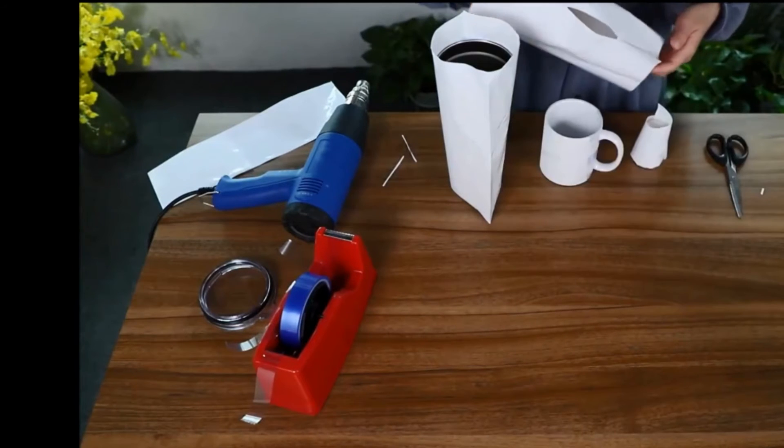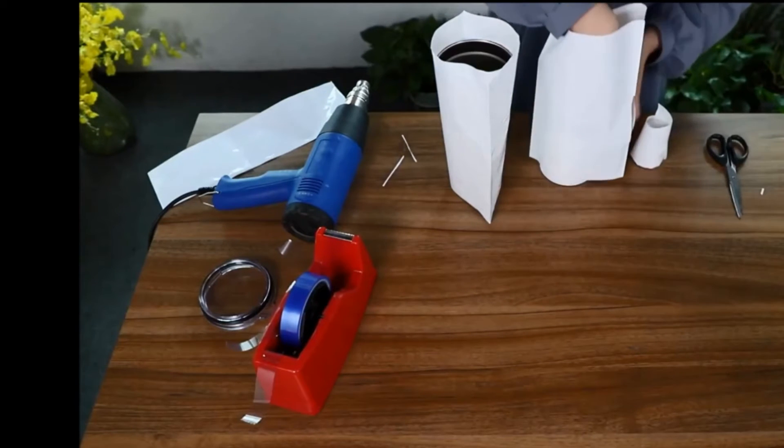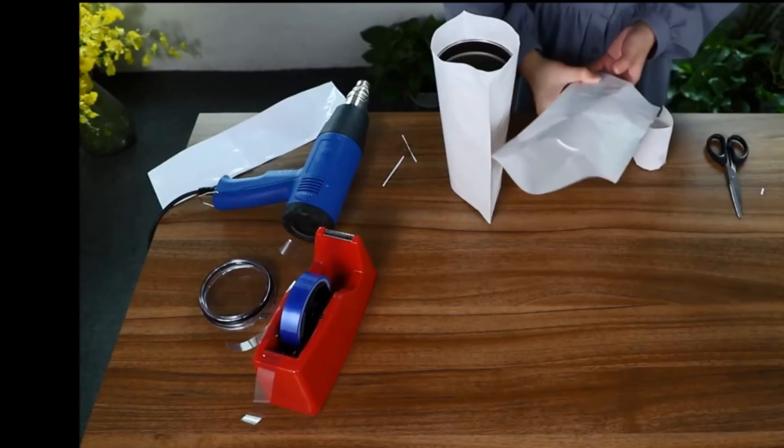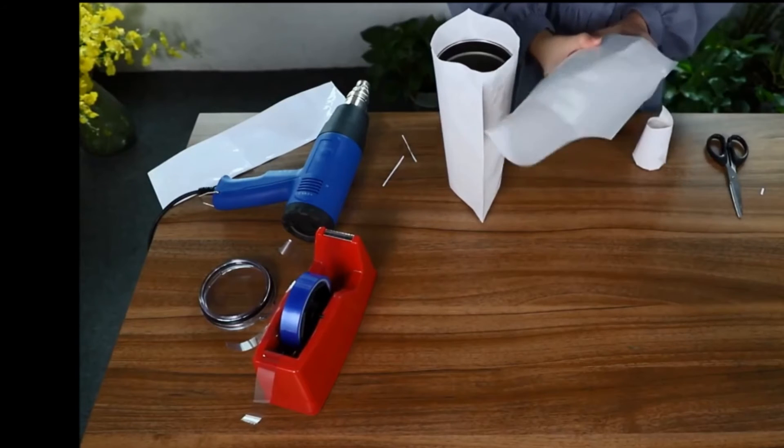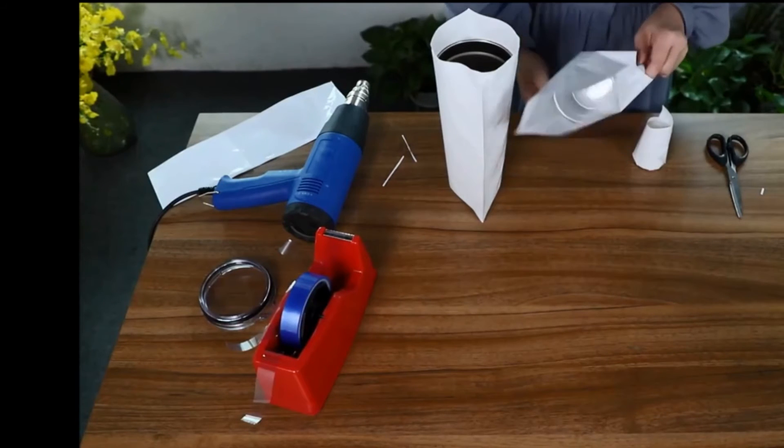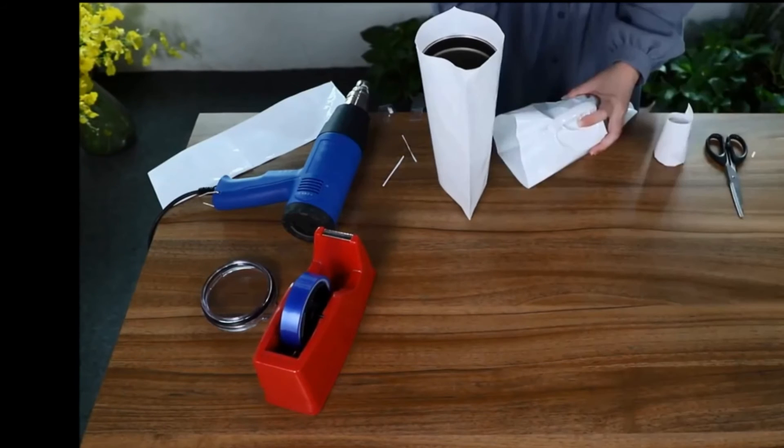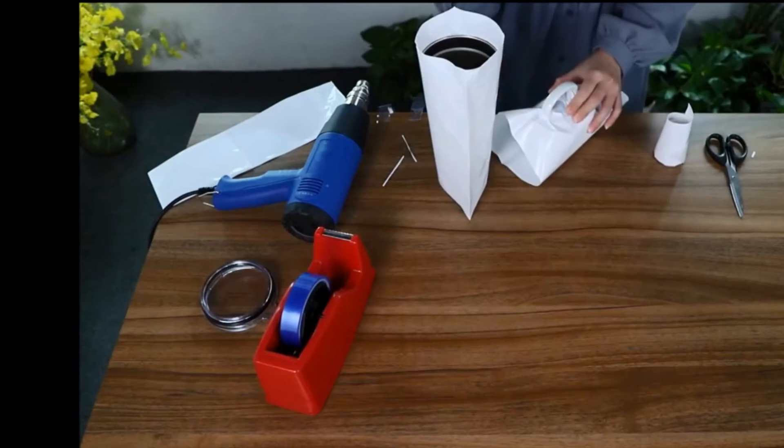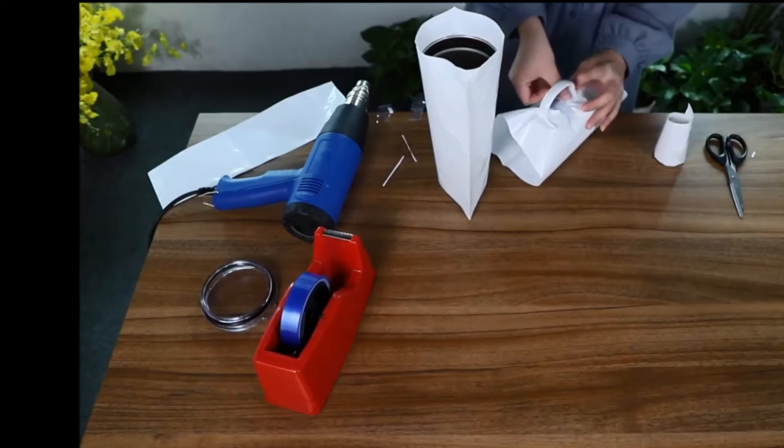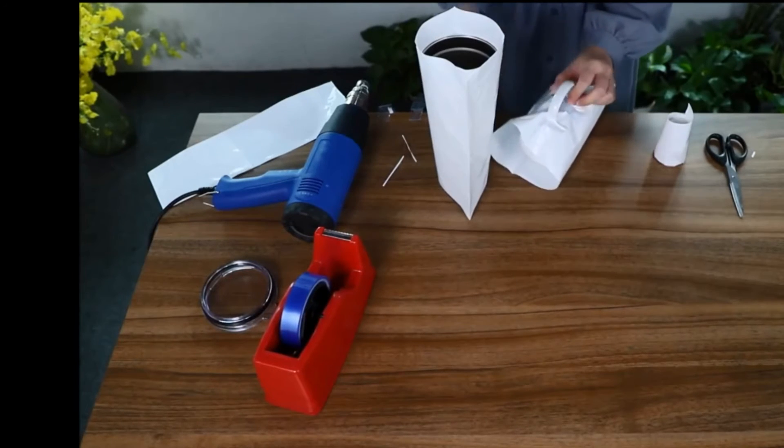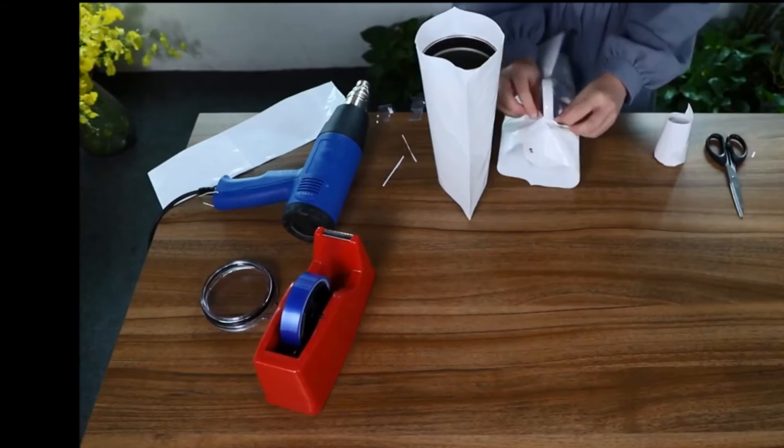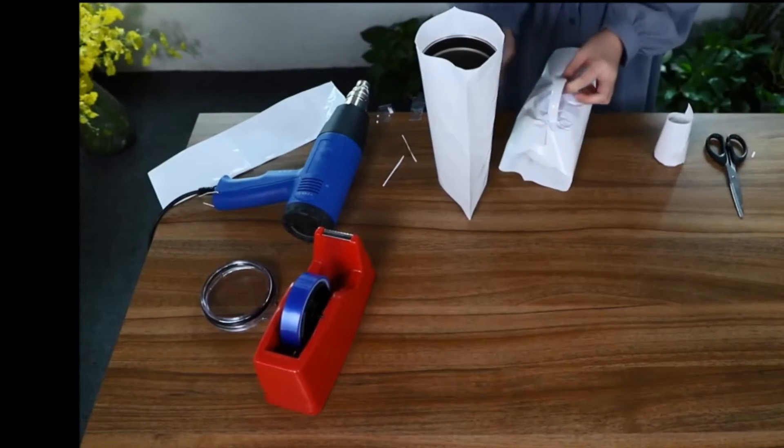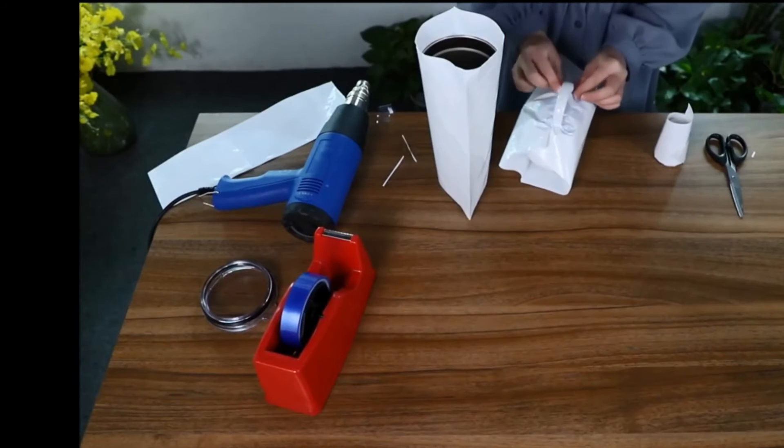Then I can place the mug into the shrink film. Apply tape as much as possible to increase the strength of it. Make sure it will not come apart after heating.